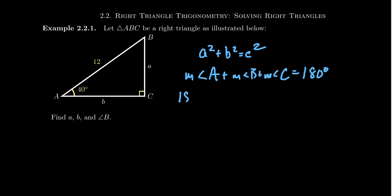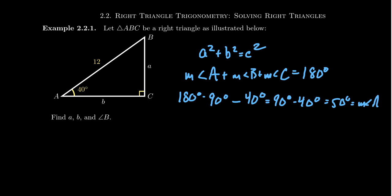We have 180 degrees. Take away angle C, which is 90 degrees, and take away angle A, which is 40 degrees. That gives us 50 degrees as the measure of angle B — the complement of 40 degrees.